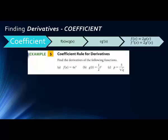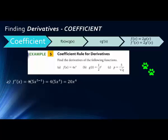Now let's look at some problems for the coefficient rule. Pause your video, try these three problems, then start again and see how you did. The first problem is 4x to the fifth. We pull the constant 4 out front, then take the derivative of x to the fifth: the exponent 5 comes down in front and we subtract 1 from the exponent. So we have 4 times 5x to the fourth, which gives us 20x to the fourth.